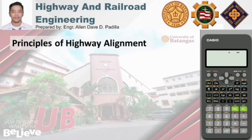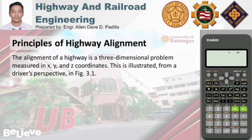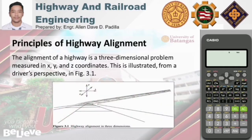For the principle of highway alignment, the alignment of a highway is a three-dimensional problem measured in x, y, and z coordinates. This is illustrated from a driver's perspective. In this figure, we can see the three-dimensional representation of a highway section from the driver's perspective.